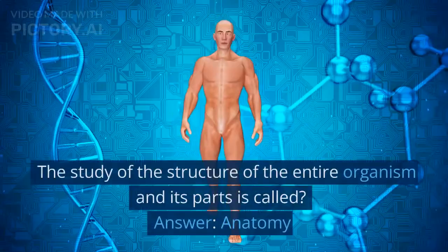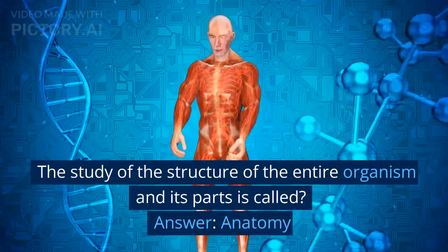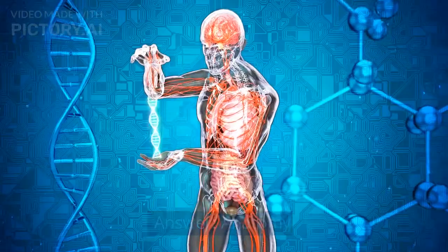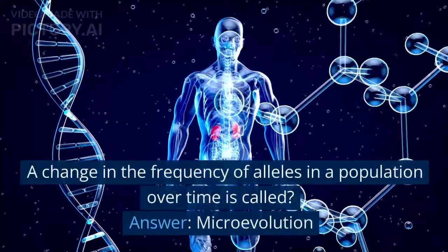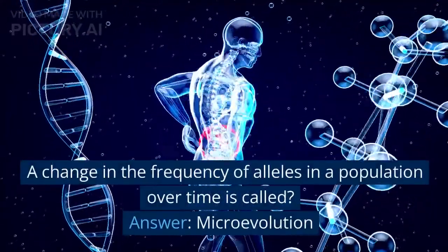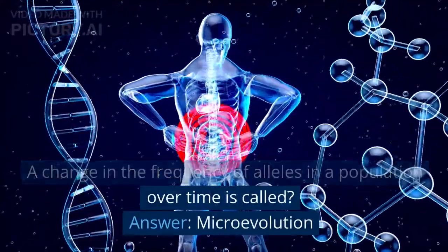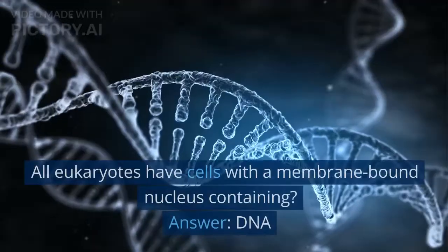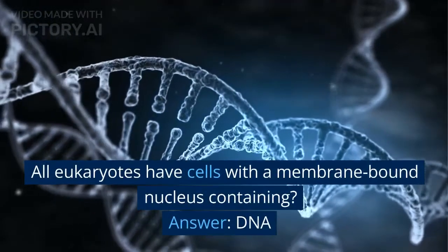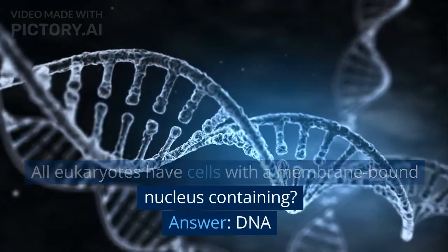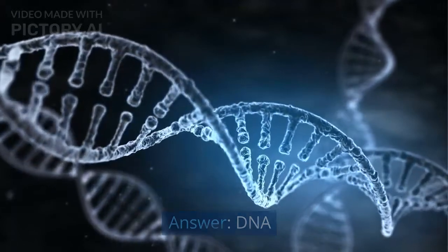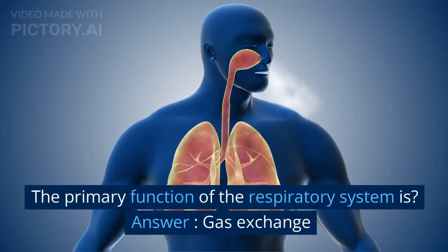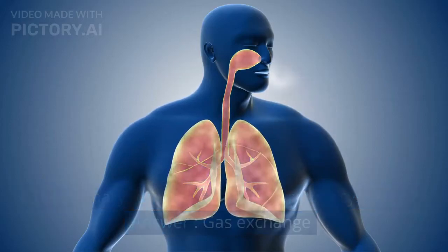The study of the structure of the entire organism and its parts is called? Answer: anatomy. A change in the frequency of alleles in a population over time is called? Answer: microevolution. All eukaryotes have cells with a membrane-bound nucleus containing? Answer: DNA. The primary function of the respiratory system is? Answer: gas exchange.